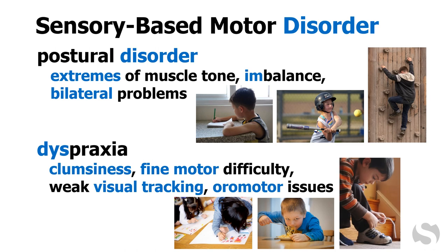Dyspraxia means trouble with movement, including when planning is involved. Symptoms include poor coordination and clumsiness, difficulty with tasks like drawing, writing, buttoning, using eating utensils, and tying shoelaces, trouble with visual tracking, and problems chewing or swallowing.